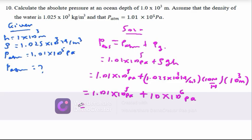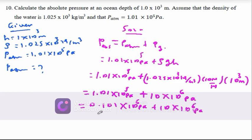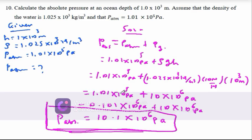Here you have to convert to add: 0.101×10⁶ plus 10×10⁶ pascals. So this is the absolute pressure. That's the end of this unit's problems. This is the academic channel — you can see the next one.